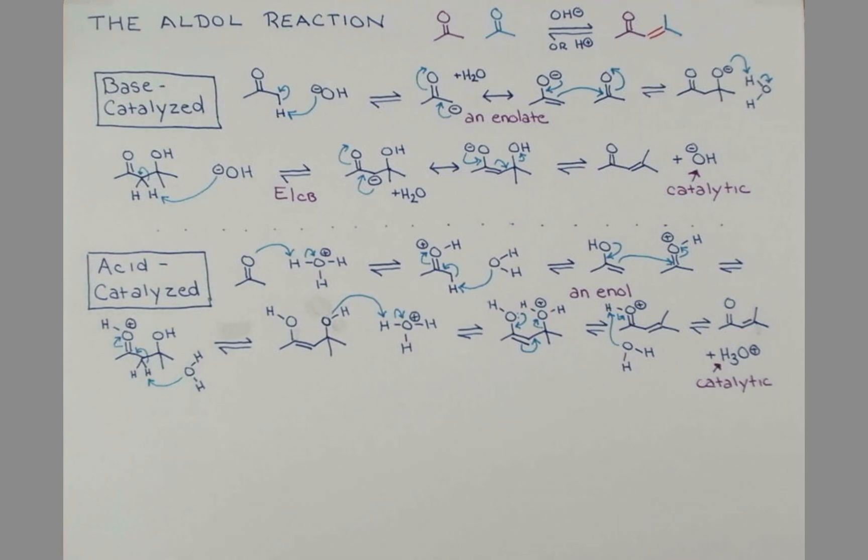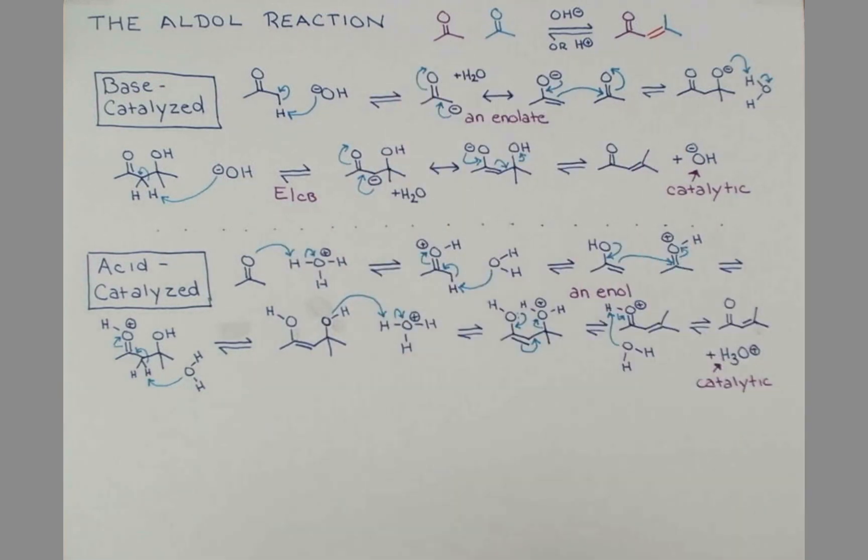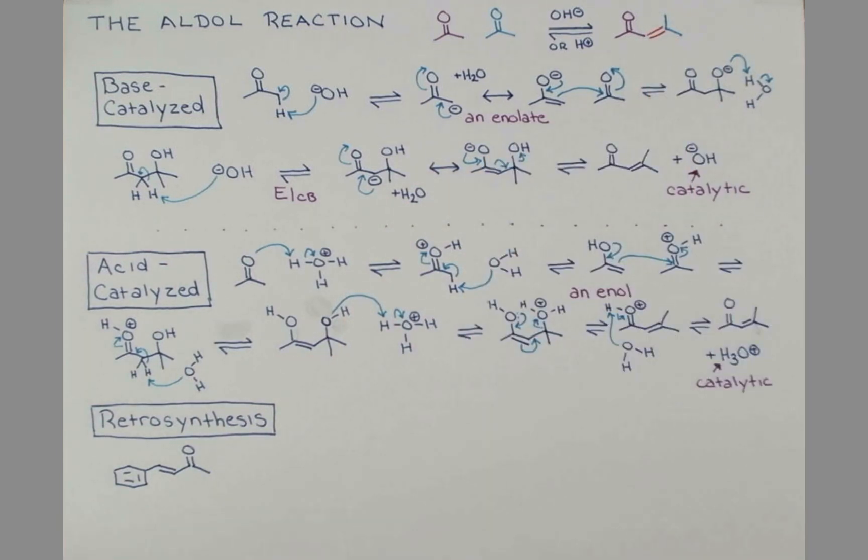Now, I want to show you how to retrosynthetically analyze the aldol reaction to determine what starting materials are producing the aldol product. This is especially important in the event that they're not the same like we have here with the self-condensation of acetone. Let's examine this enone as our example. So what I like to do is just draw a squiggle through my double bond. Notice that's the new bond that forms up here. And so then I can think about this in two parts.